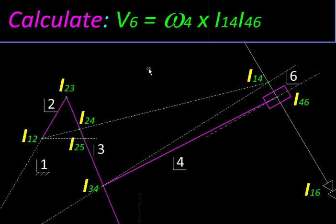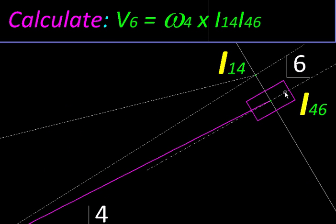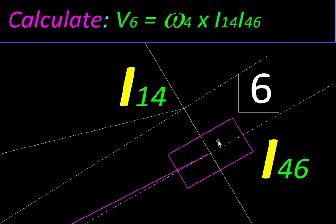Then we use that omega, omega 4, and the center i14 and 46 over here to find the velocity of this slider. Since it is on link 4, its distance from link 4's center multiplied by link 4's omega would give us its velocity, which is nothing but the velocity of slider as well.